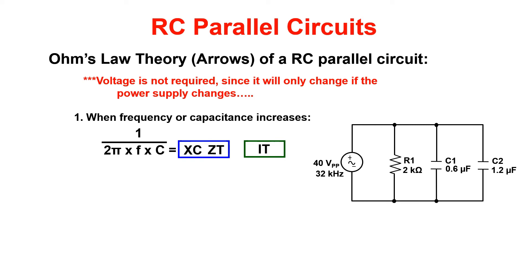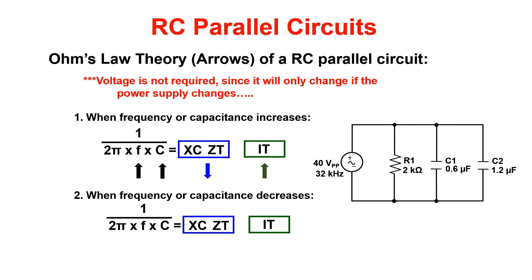With an increase in frequency or capacitance, XC and ZT will go down and IT will go up. Now if frequency or capacitance decreases, XC and ZT will increase and IT will decrease.